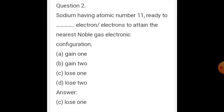Sodium, having atomic number — is ready to gain or lose electrons to attain the nearest noble electronic configuration. Sodium's nearest noble gas is neon, atomic number 10. So sodium needs to lose 1 electron. The correct answer is lose 1.